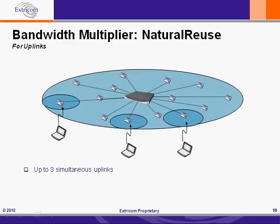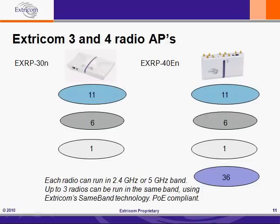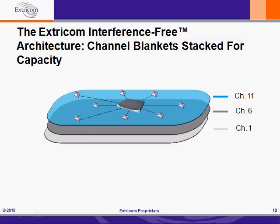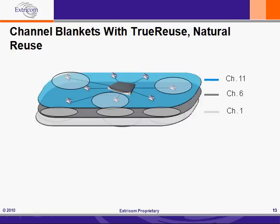Now, let's add channels 1 and 6 to the Extracom deployment. The way we add channels 1 and 6 is by activating two more radios inside Extracom's multi-radio AP. In our use case, we are deploying the EXRP30N, which is shown on the left side of the slide. By activating the other radios inside the EXRP30N, we now have three blankets of wireless LAN coverage stacked for capacity. Each blanket is operated by a different radio in the access point, ensuring that there is no contention between the blankets at any time. Factoring in TrueReuse and NaturalReuse with three blankets of coverage, we can support nine simultaneous wireless transmissions — and that's within the relatively restrictive 2.4GHz band.